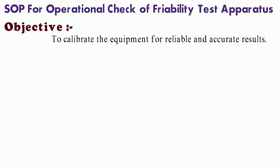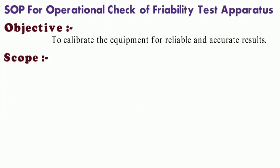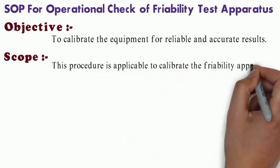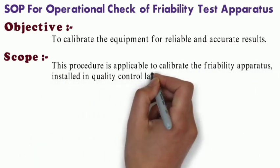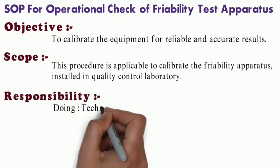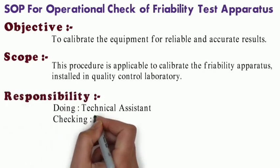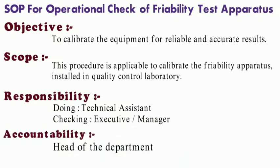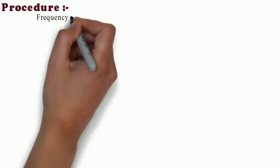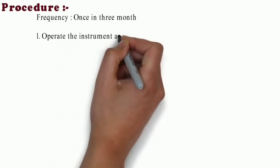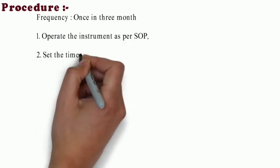This is to calibrate equipment for reliable and accurate results. Scope: this procedure is applicable to calibrate the friability apparatus installed in quality control laboratory. Responsibility of doing is for technical assistance and checking is for executive manager. Accountability: head of the department.